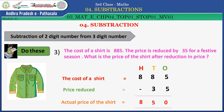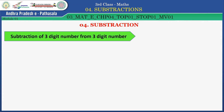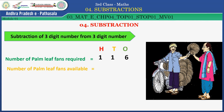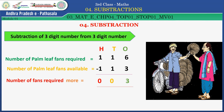Shall we continue the next one — subtraction of a 3-digit number from a 3-digit number. Observe the picture, children. Number of palm leaf fans required: 160. Number of palm leaf fans available: 130. Ones place: 6 minus 3 equals 3. Tens place: 1 minus 1 equals 0. Hundreds place: 1 minus 1 equals 0. Number of more palm leaf fans required: 3.